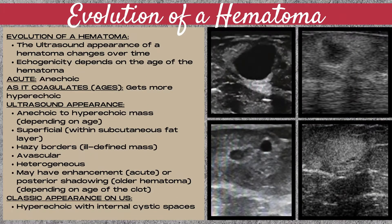The evolution of a hematoma: a hematoma is a mass that will change appearance over time, and the echogenicity of the hematoma depends on the age of the hematoma. When a hematoma is acute, meaning it just occurred, it's going to be anechoic and look like a cyst. As this pocket of blood coagulates or ages over time, it's going to become more hyperechoic in appearance.